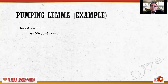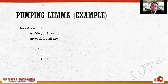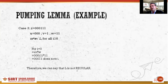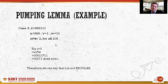We try Case 3: u = 000, v = 1, w = 11. For i = 0 we get 000·11 = 00011, which also does not belong to L. Case 3 fails as well. After taking these cases, since no combination satisfies the expression for all i, we can say the assumption that L is regular is contradictory, and therefore L is not a regular set.